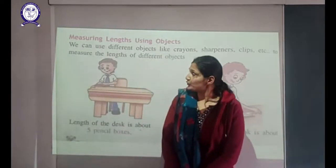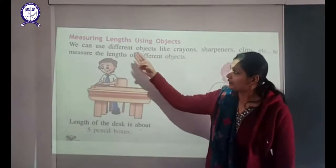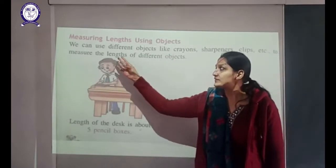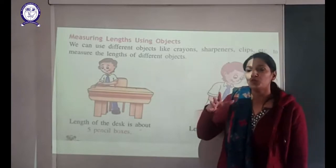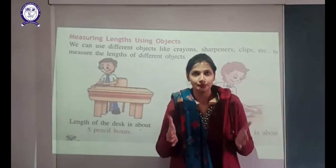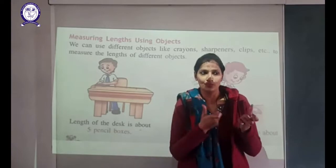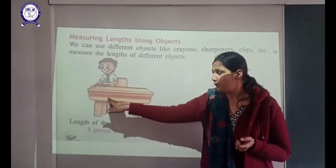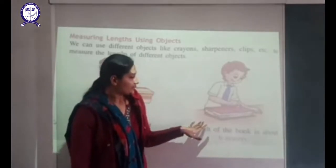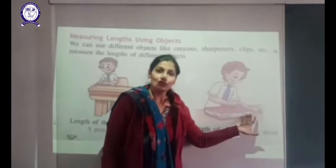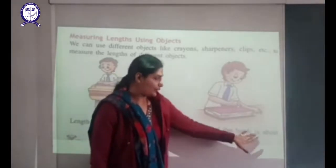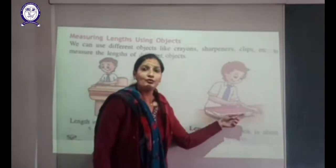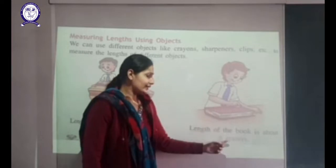We can also measure length using objects like crayons, sharpeners, clips, etc. For example, a boy is going to measure the length of a book. The length of the book is about six erasers — he needs six erasers to measure the length of the book.